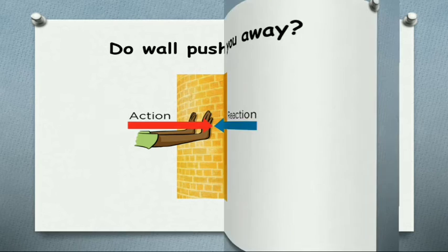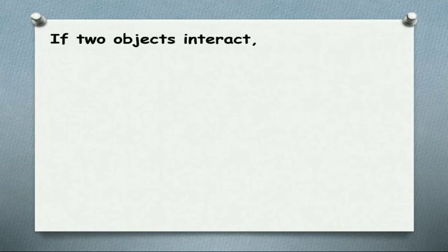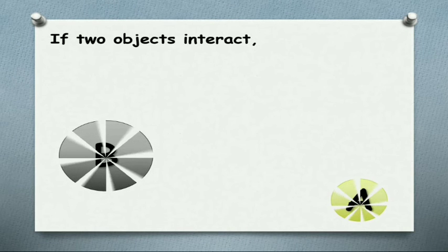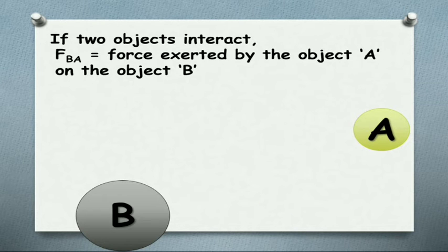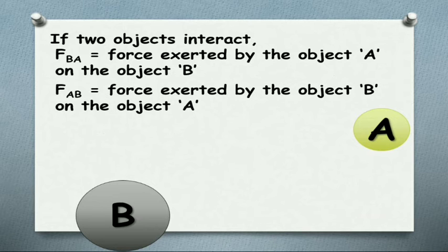If two objects interact, let us say A and B, when they come and interact, FBA is the force exerted by object A on object B. FAB is the force exerted by object B on object A. From Newton's law, we say that FAB equals FBA but the direction is opposite, hence we keep a minus sign.